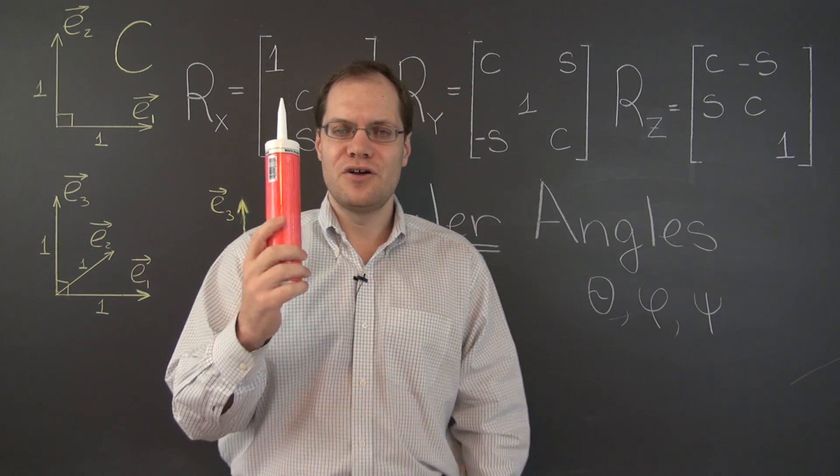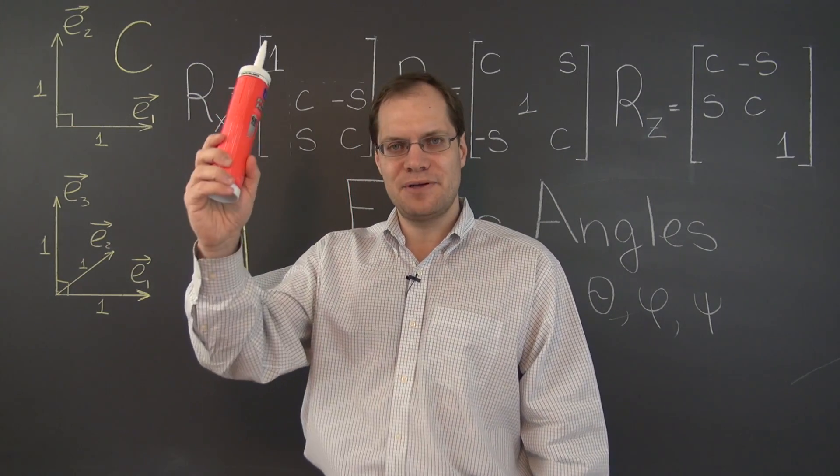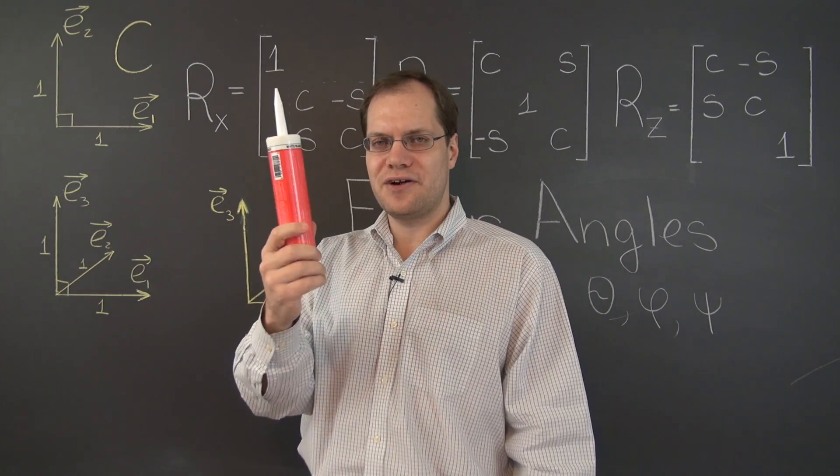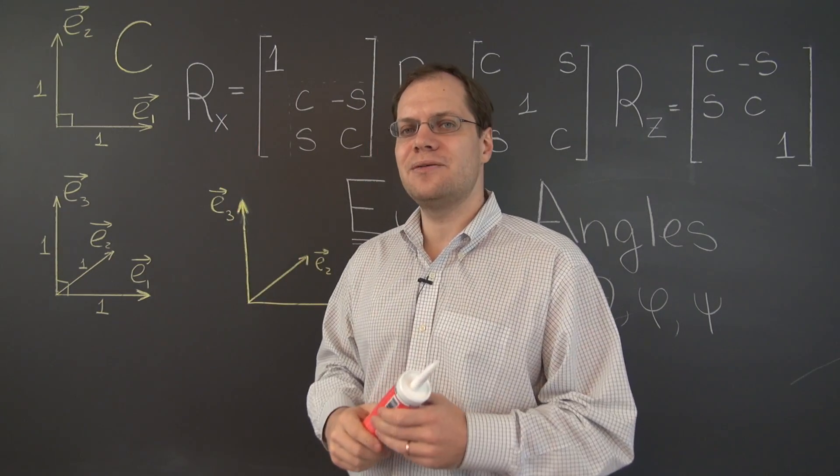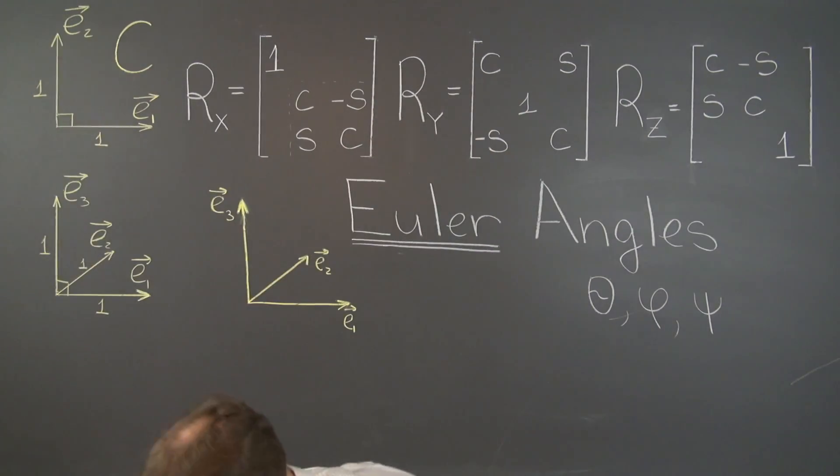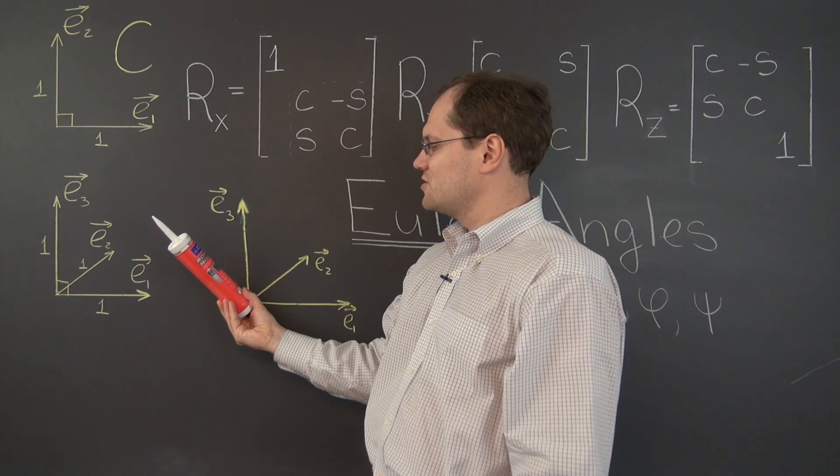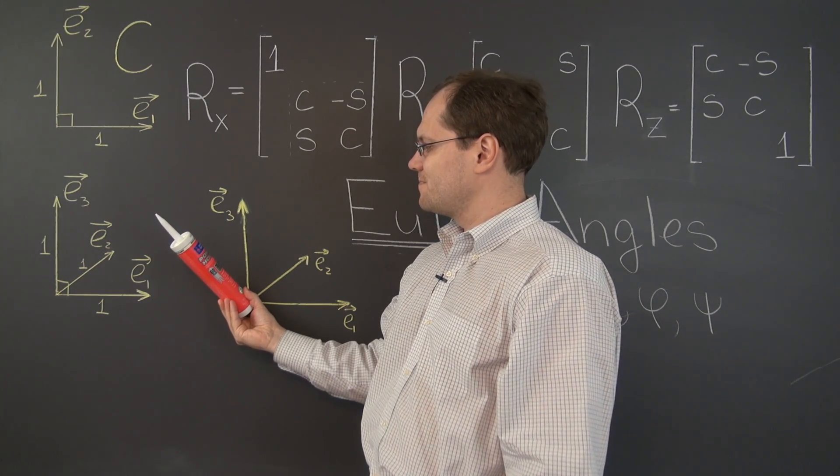So we'll get there. First, let me generate a random orientation of this body. I will toss it up in the air, let it tumble, and then I'll catch it. And however I catch it, that's our random orientation. So here we go. All right. Here it is. Not bad.